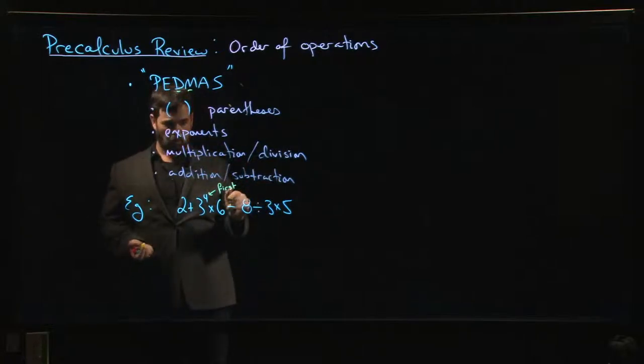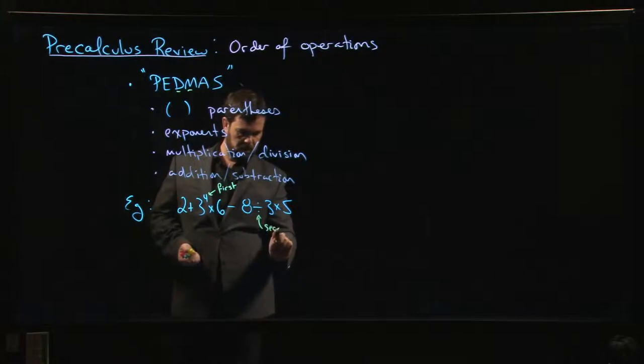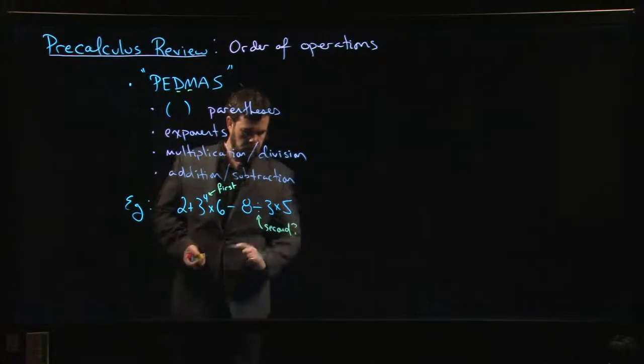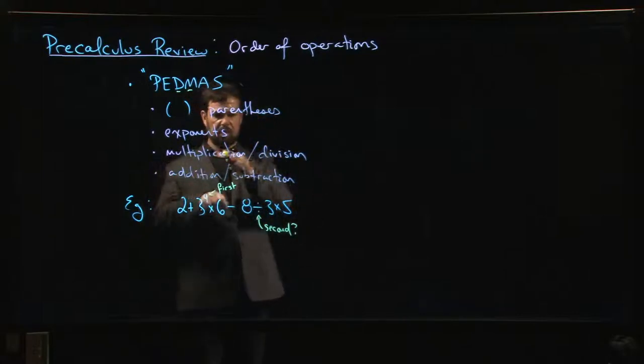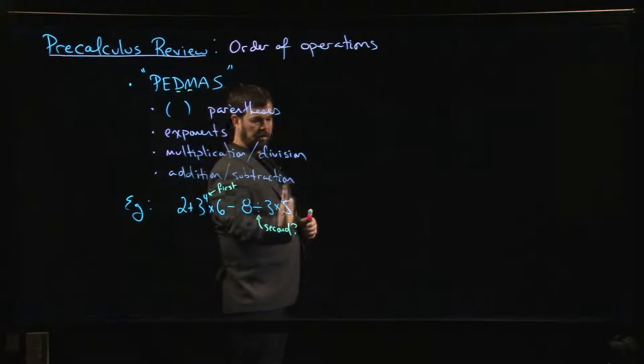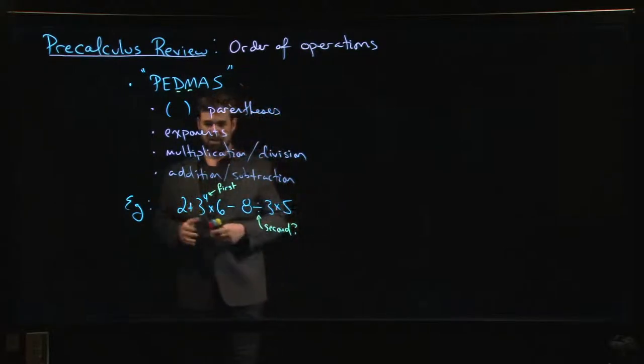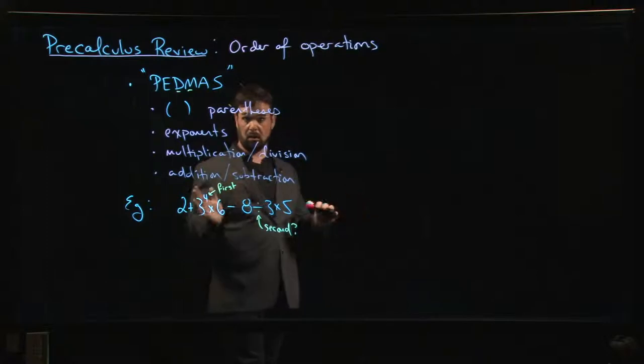Some people say yes, do division first. Others say division and multiplication come as a group and you should work from left to right. There's actually no agreement on that. You can find calculators programmed either way, so you really shouldn't write down an expression like this with such ambiguity.